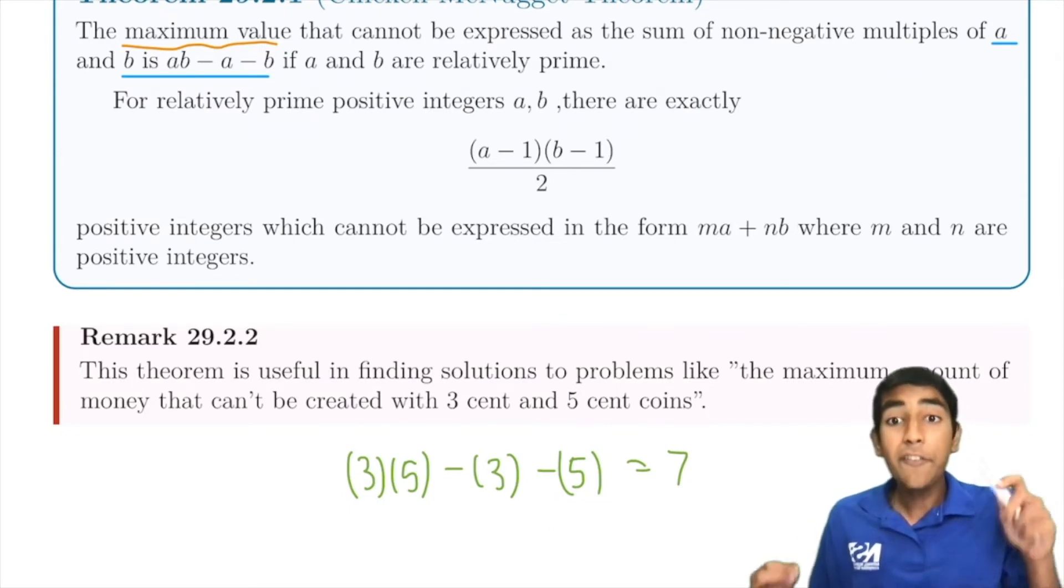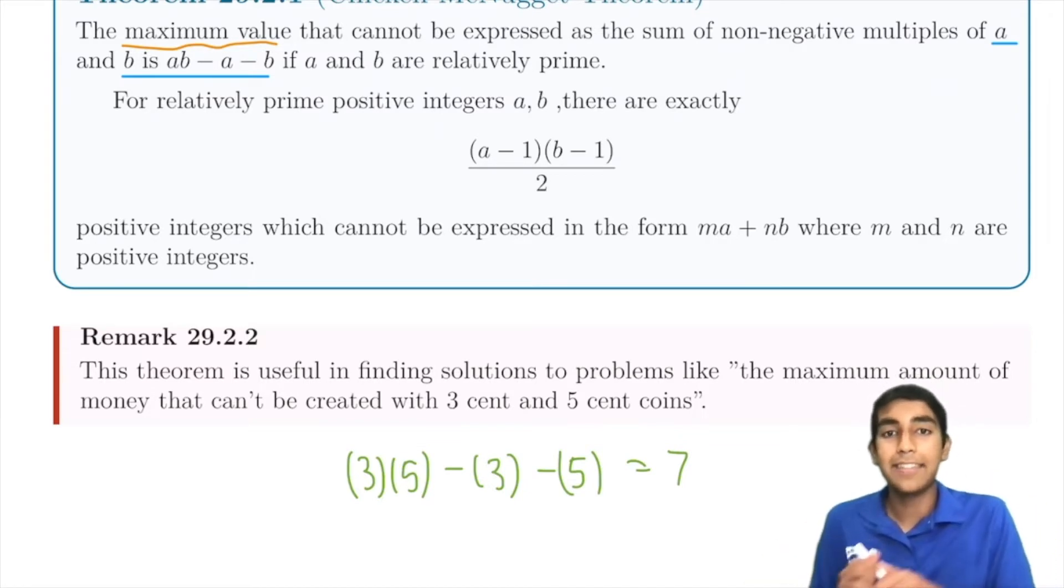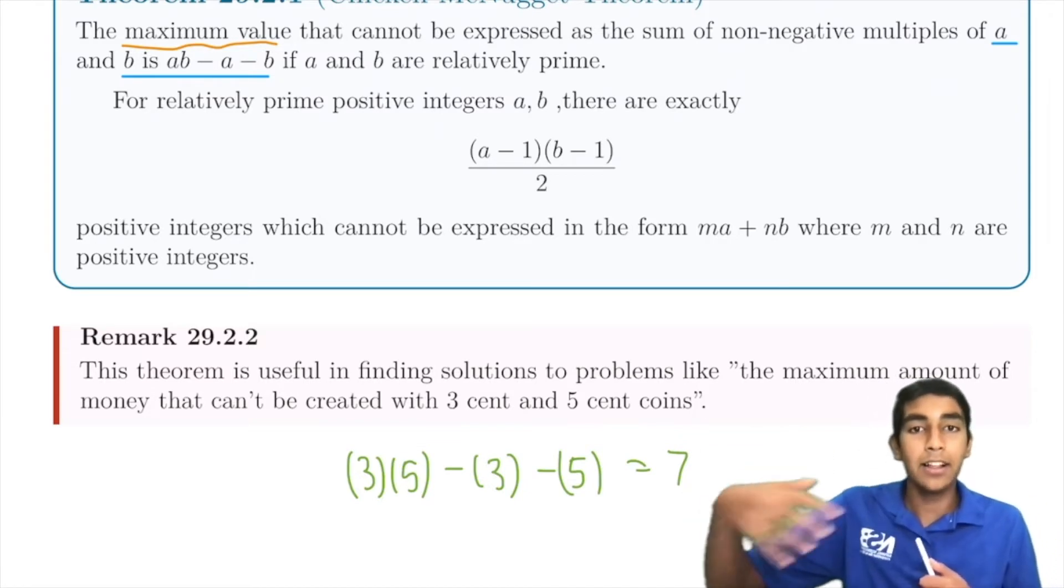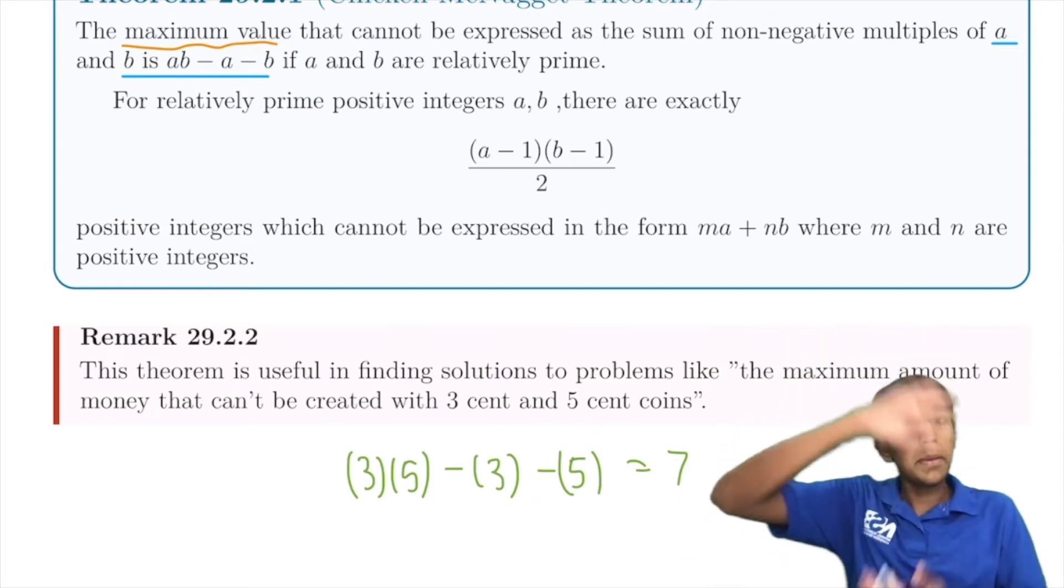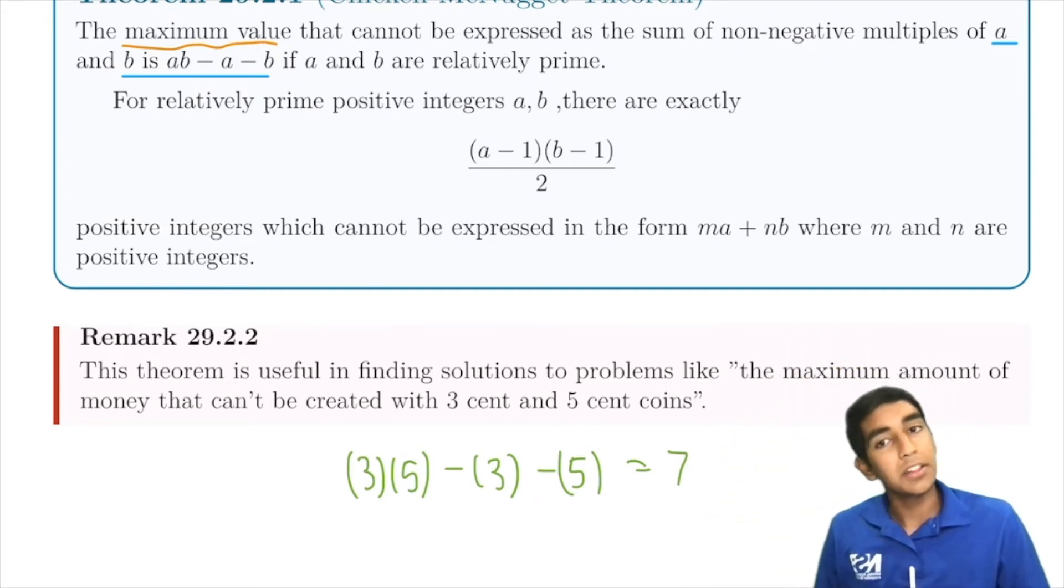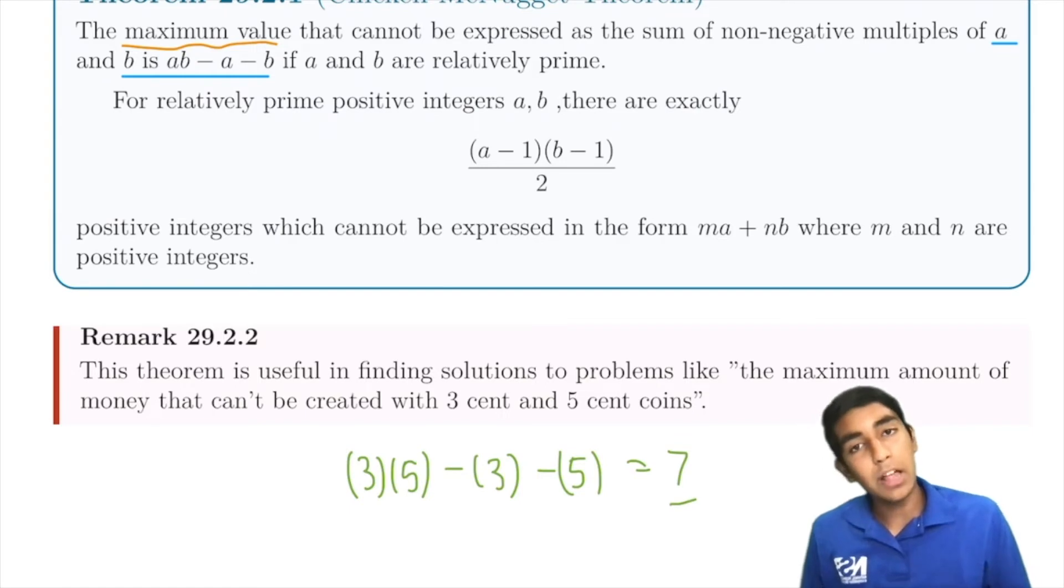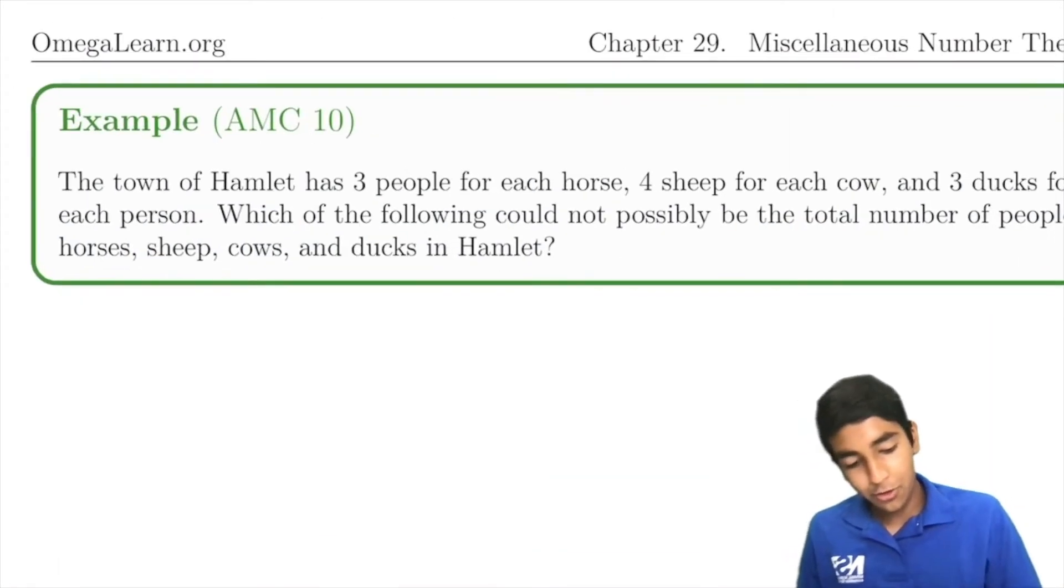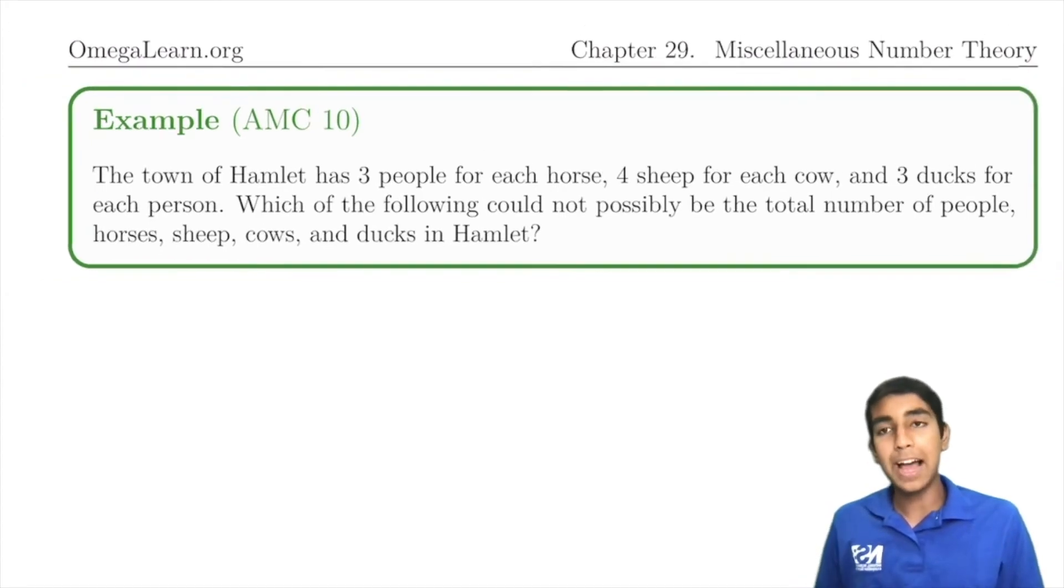What does that mean? Every number after 7 can be created with 3 and 5 cent coins: 8, 9, 10, 11, and so on. They can all be made with 3 and 5 cent coins, because 7 is the maximum value that can't. Cool theorem, huh? But let's use it in this interesting problem that applies it.